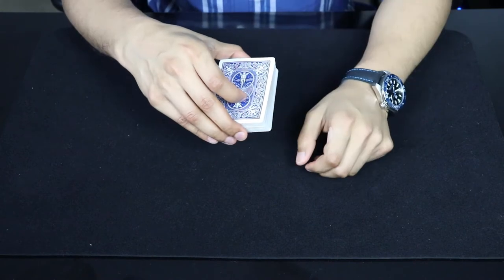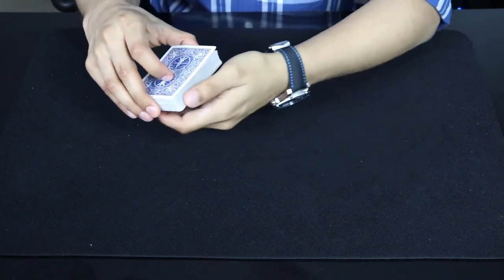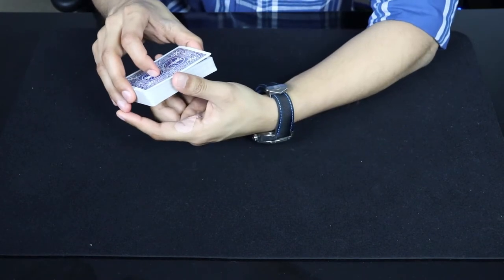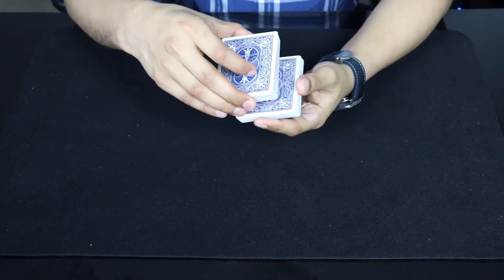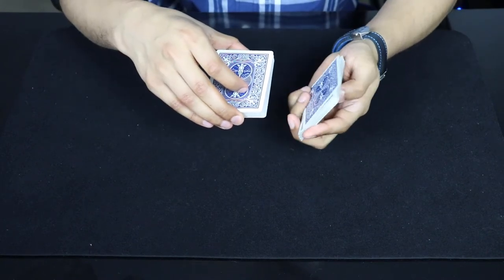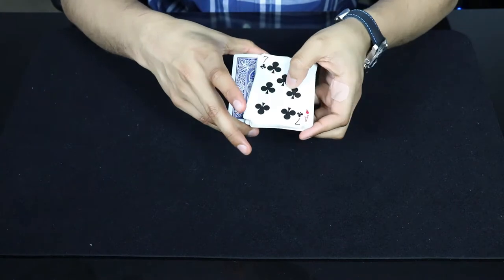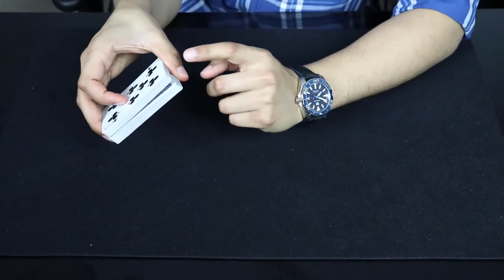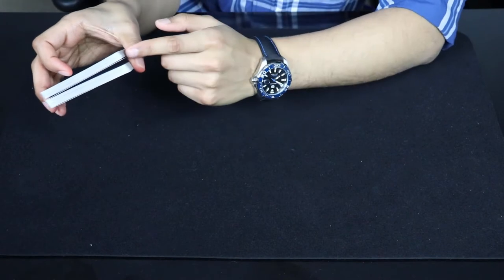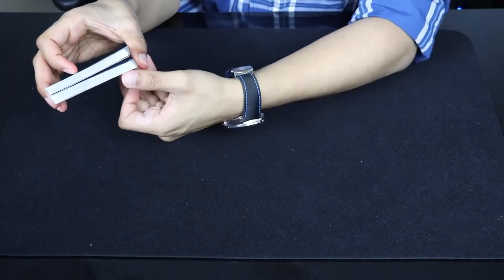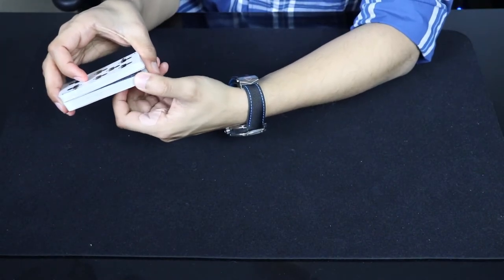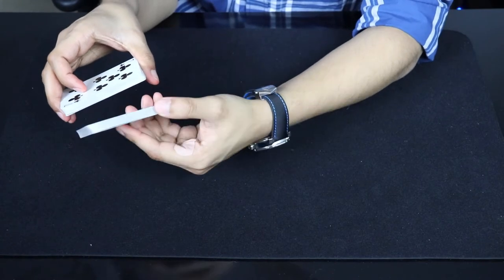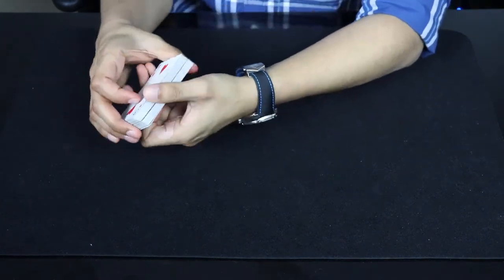So now once we have this break, what we're going to do is take about half the deck. Right, come out with half the deck, turn it over and put it on top of the deck. And this is going to be right above the thumb break. So you'll see the thumb break is still there. Then we're going to take the rest of the cards from below the thumb break, take them out, turn them over as well, and put them on top.